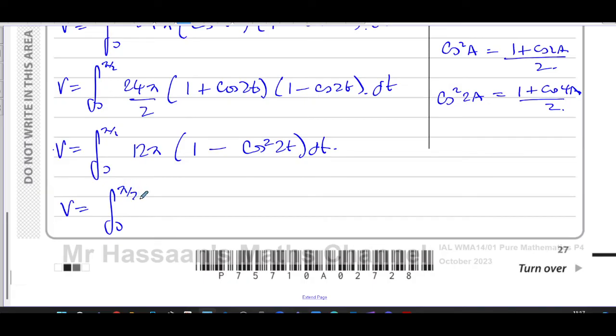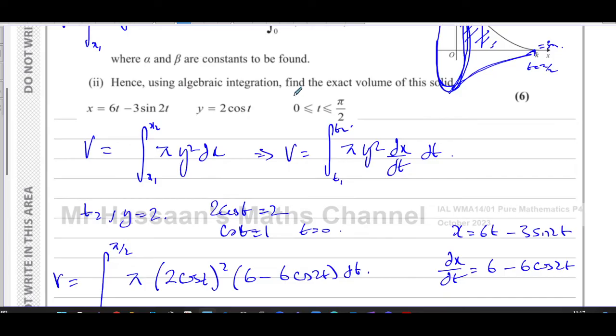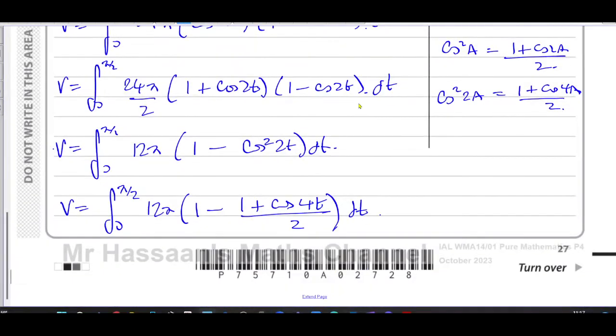So I can replace this with 1 plus cosine 4a over 2, which kind of looks promising. Looks a bit promising. So let's go ahead. And I'm going to go to the next page eventually. So this is zero and pi over 2. This is 12 pi, 1 minus, and you're going to have 1 plus cosine of 4t all over 2. And you're going to integrate that with respect to t.